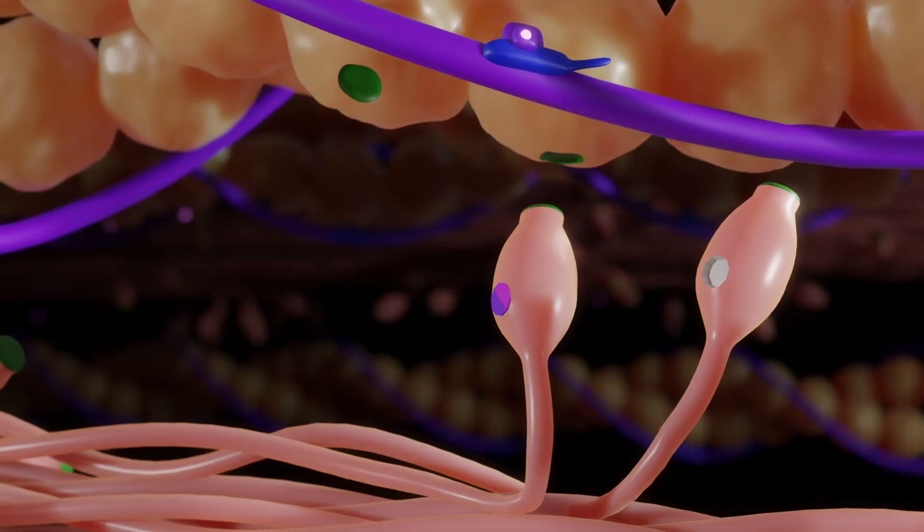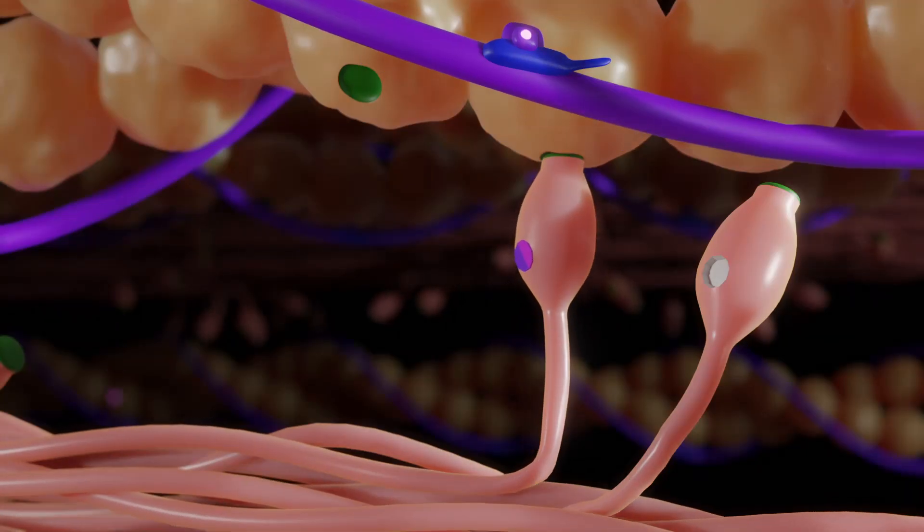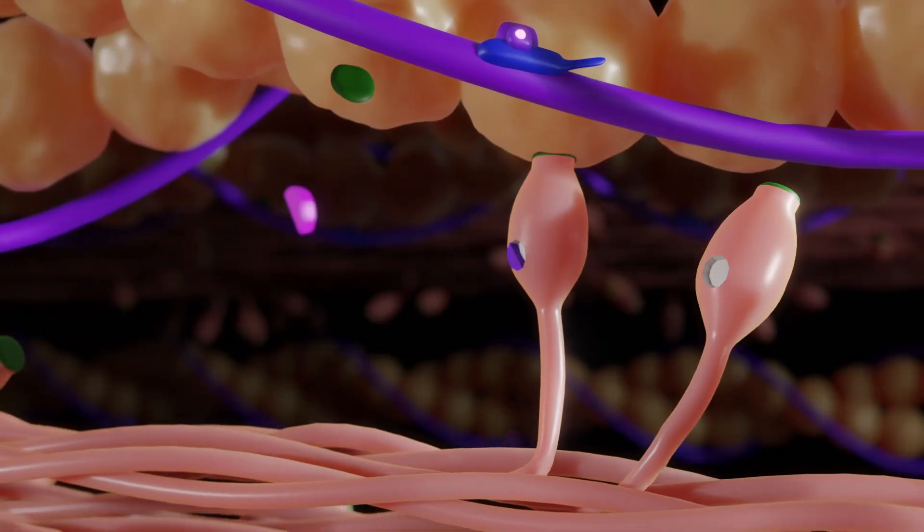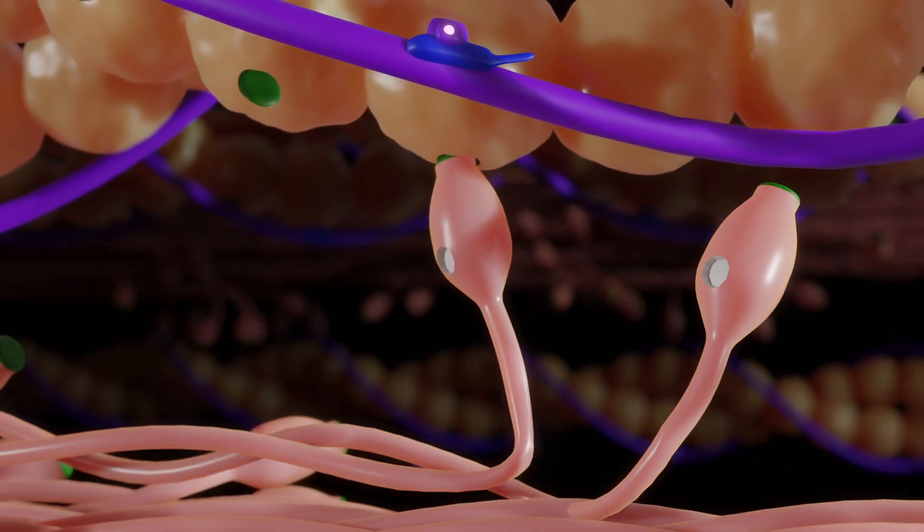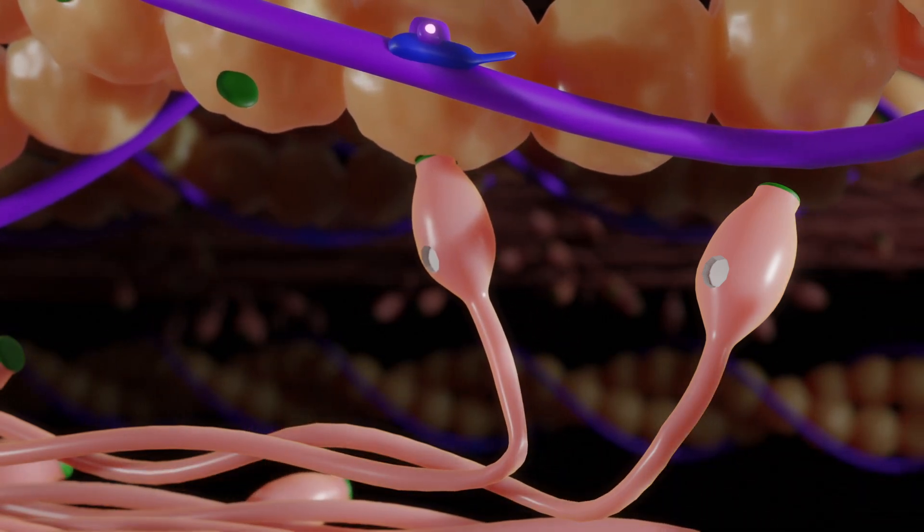A cycle proceeds as follows. The myosin head docks onto the corresponding binding site of the actin filament, performs a tilting movement, and pulls the filament towards the center of the sarcomere.